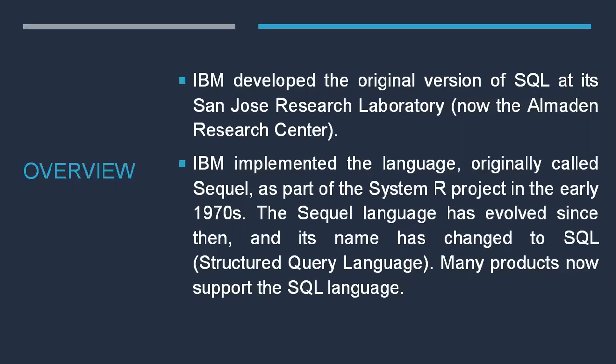IBM developed the original version of SQL at the San Jose Research Lab, now called the Almaden Research Center. IBM implemented the language, originally called SEQUEL, as part of the System R project in the early 1970s. The language evolved since then and its name changed to SQL, which stands for Structured Query Language. Some people also call it SEQUEL.